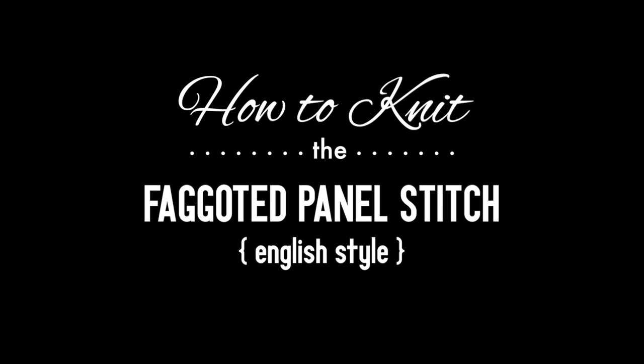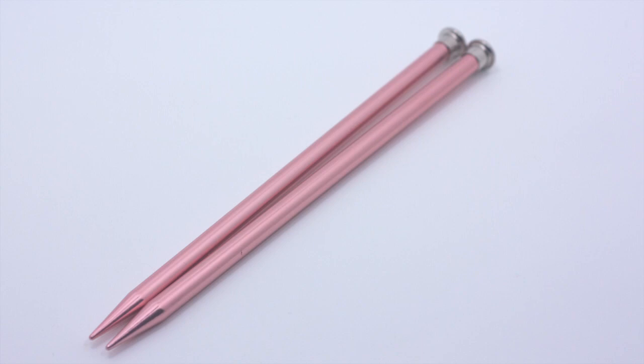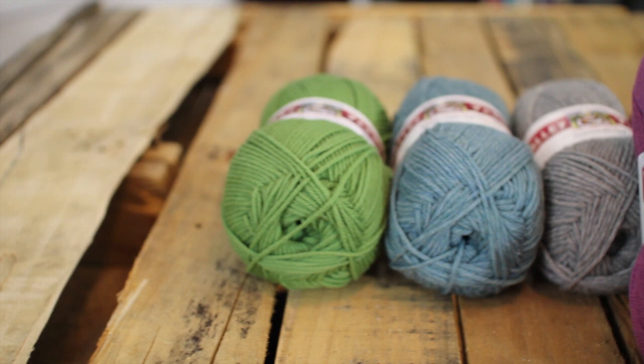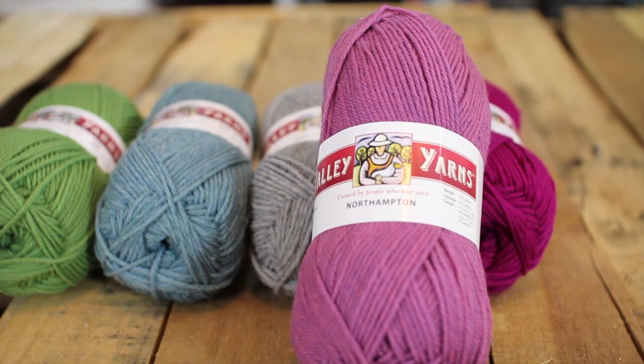How to knit the fagoted panel stitch English style. For this tutorial you will need a pair of knitting needles and a ball of yarn. Special thanks to our sponsor webs for providing today's yarn. Today we are using their Northampton yarn from their Valley Yarns line in the color Raspberry Heather.